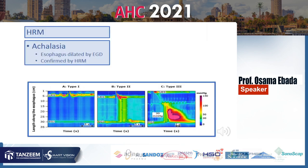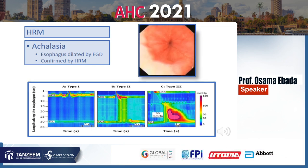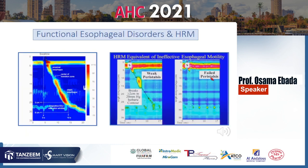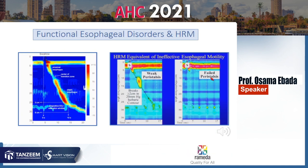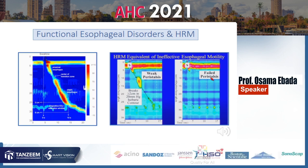The most common motility disorder is achalasia, suspected on esophagogastroduodenoscopy and confirmed by high resolution manometry. There are three types of achalasia — type 1, 2, and 3 — according to the pressure topography. For functional esophageal disorders, weak peristalsis or failed peristalsis does not constitute a major motor disorder; it can occur with functional esophageal disorders.